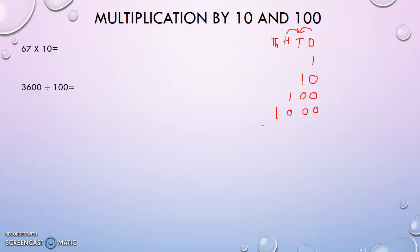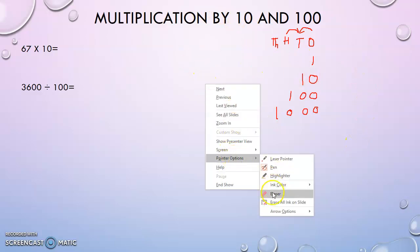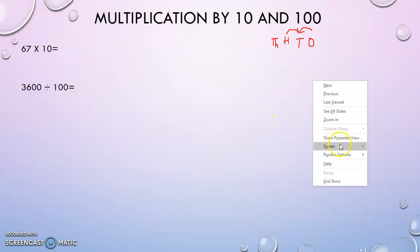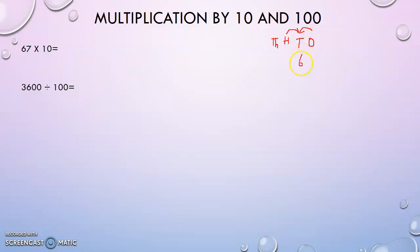Moving to a higher place value is equal to multiplying by ten. So sixty-seven into ten — we move the digits one place to the left. Since the ones place is now vacant, we put a zero. So sixty-seven into ten gives us six hundred and seventy.